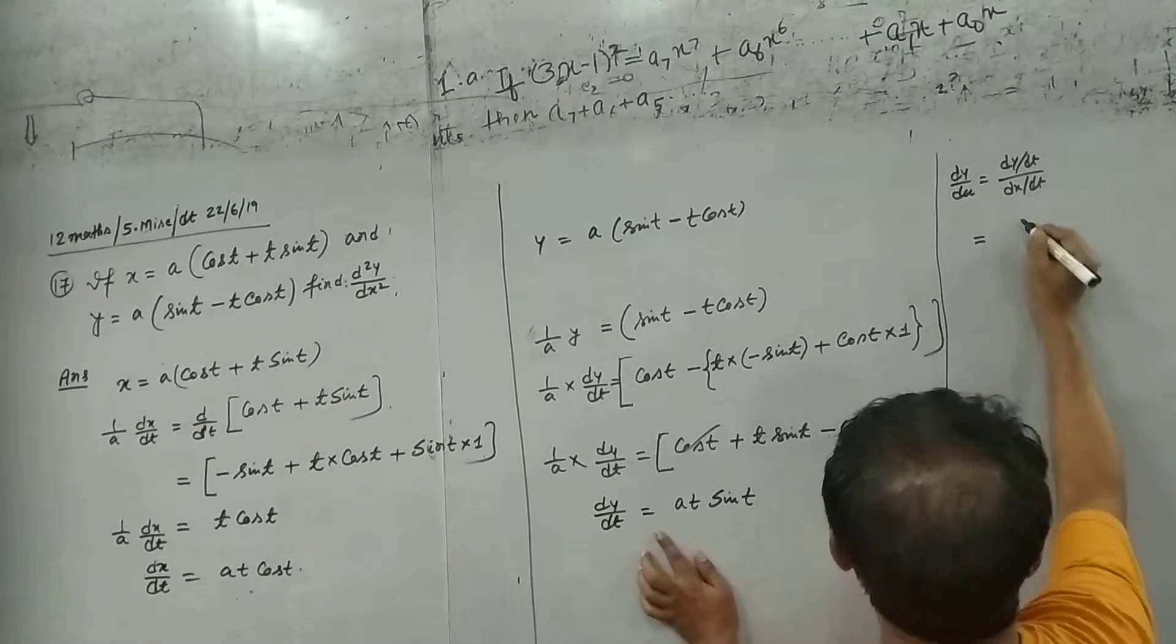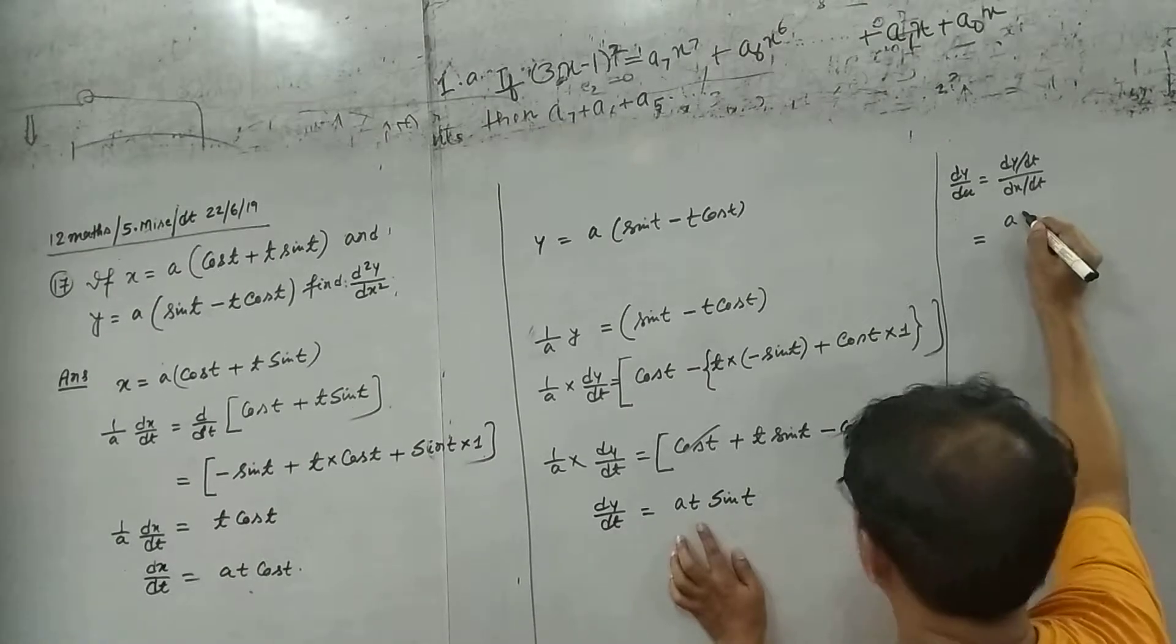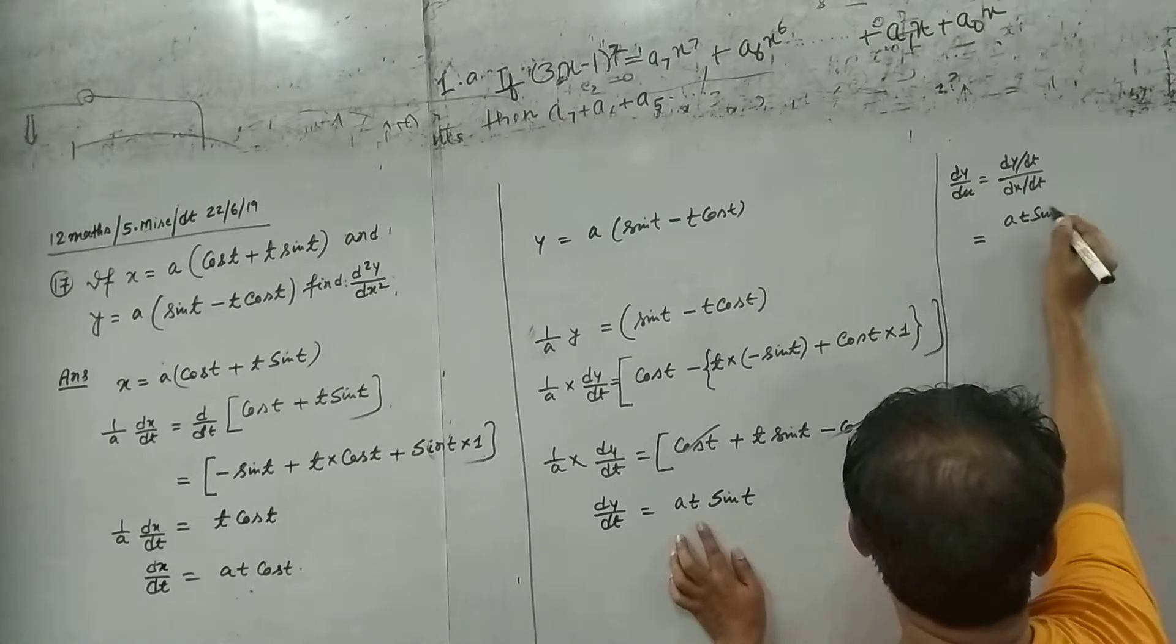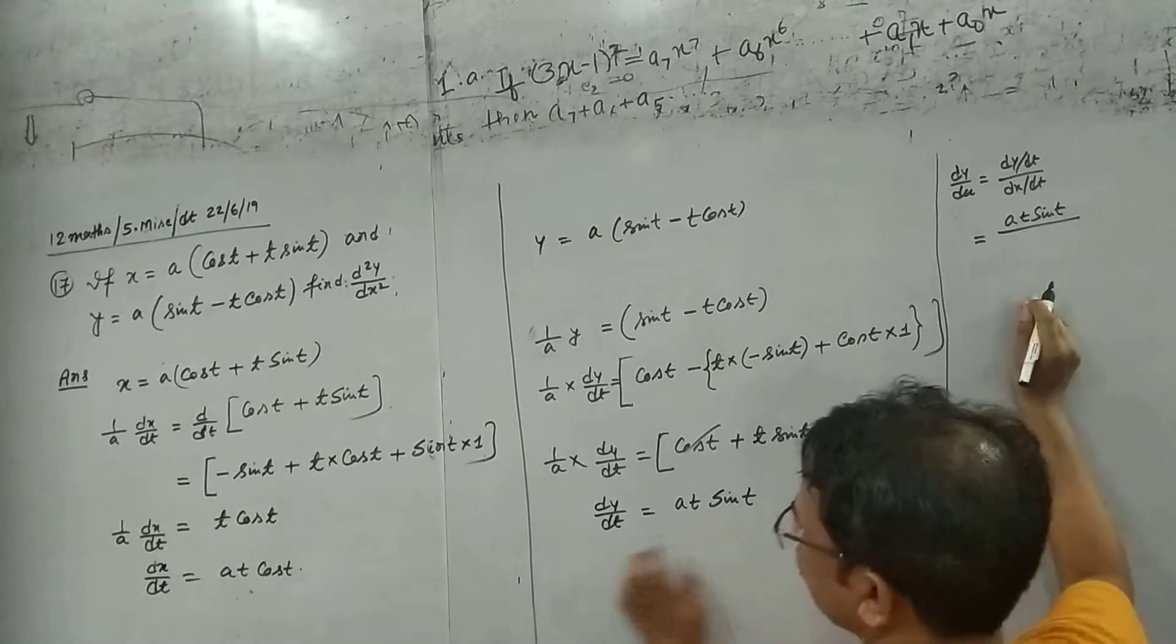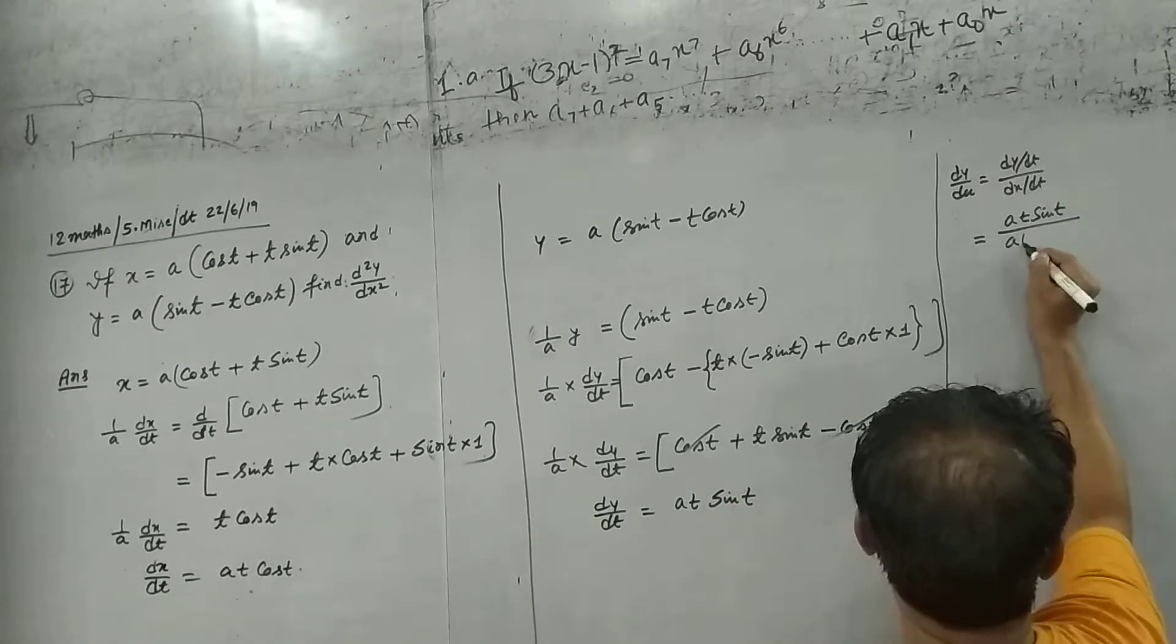dy upon dt is 80, 50, dx upon dt is 80, b by dt, 60.